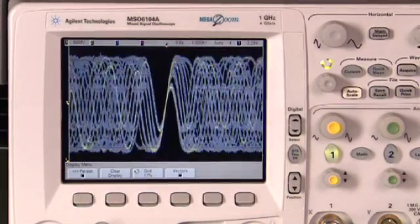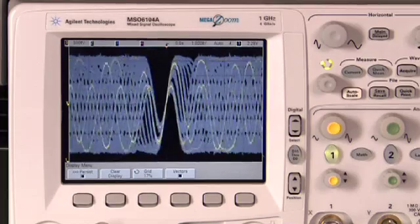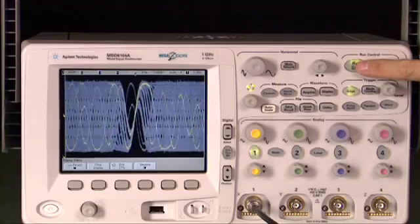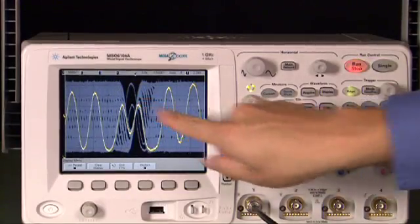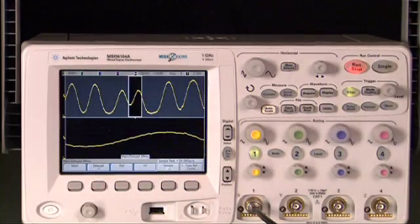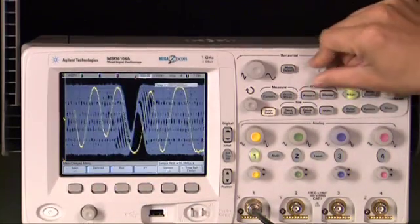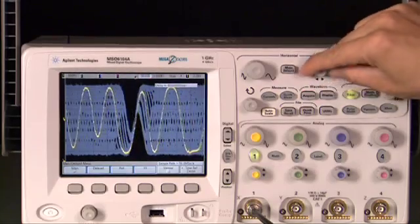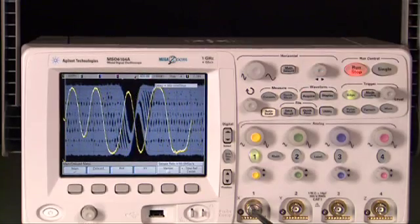Only with infinite persistence activated can you keep a glitch present on the display. But when you pan or zoom in to see details, watch what happens to the glitch. It's gone again. That's because Agilent's persistence is strictly a display method and not a memory management technology.